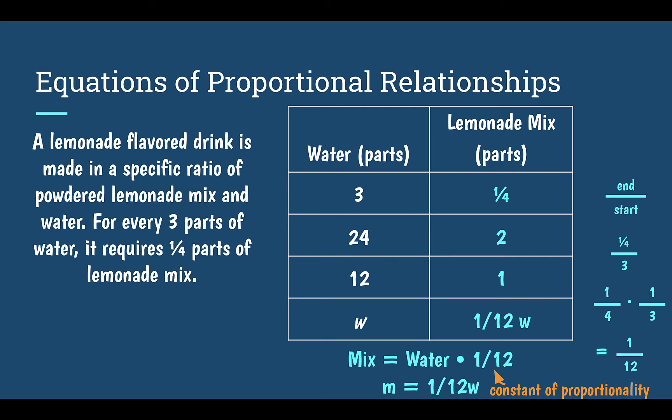Our constant of proportionality from the previous direction was twelve, and this time it's one twelfth. Going from mix to water we multiplied by twelve; going backwards from water to mix, it's the reciprocal — one twelfth. We could have used that information from the beginning, and here's another proof of how that works.